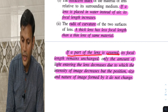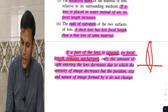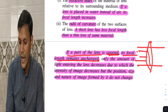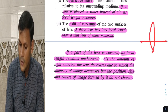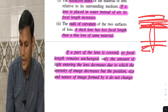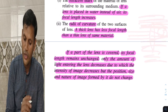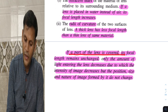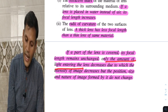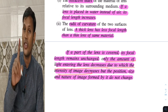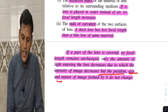An important point: if a part of a lens is covered, its focal length remains unchanged. The remaining part still focuses parallel beams at the same point. Only the amount of light entering the lens decreases, reducing the intensity of the image. But the position, size, and nature of the image do not change.